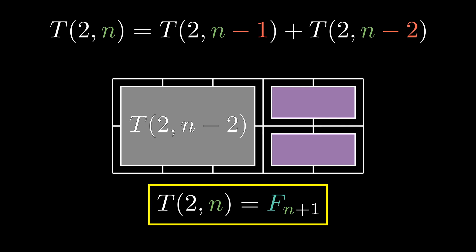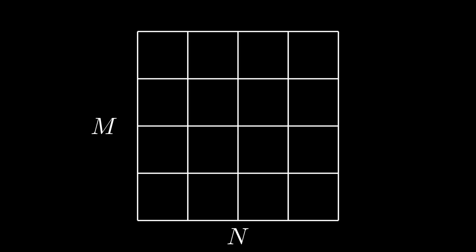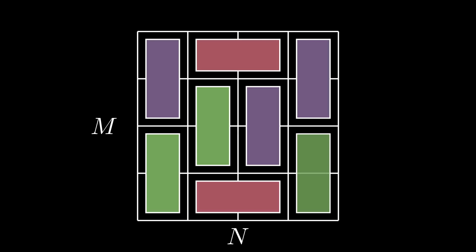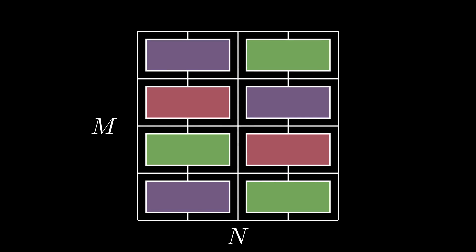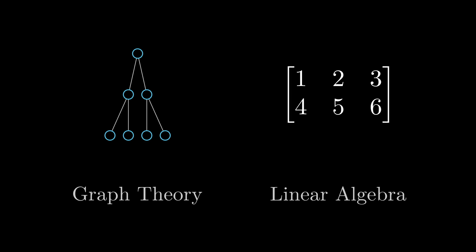Now, here's where the real problem starts. How do we generalize this? Let's consider a 4 by 4 board. There are just too many ways to get the recursive solution, and this becomes an infeasible approach for any general m by n. Let's take a different approach using graph theory and linear algebra.